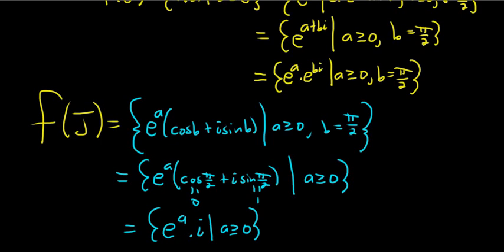So now we're going to try to graph this. Let's attempt to do that. So I'll do it over here. So i is right here, it's on the imaginary axis. But all of the elements here are of the form e to the a times i. Let's think about this.